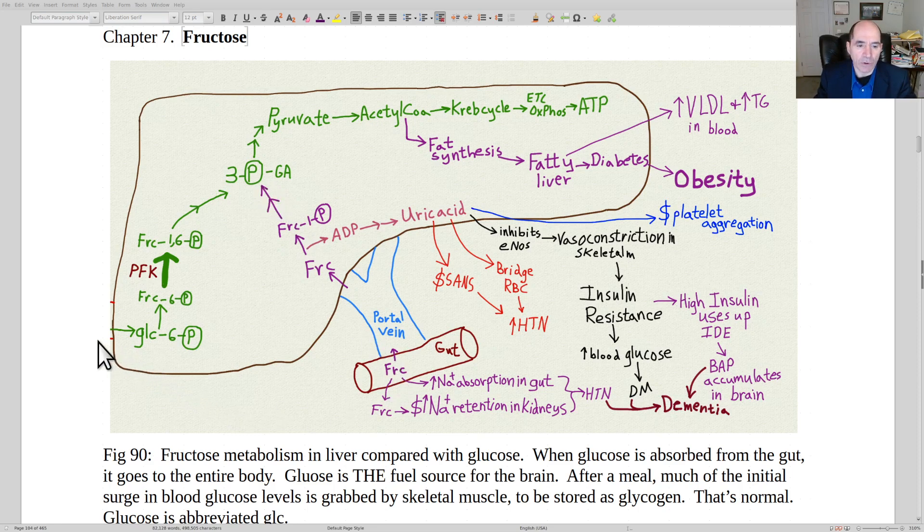Fructose and glucose, here's glucose coming in, they're both six-carbon sugars. But in the middle of the pathway, it gets split in half into a three-carbon sugar and there's very little regulation in the second half of the pathway.